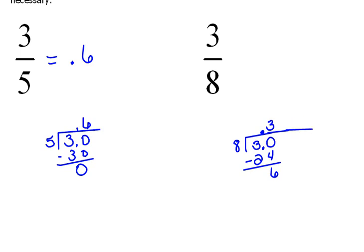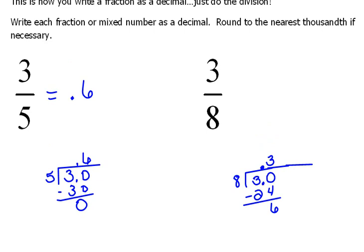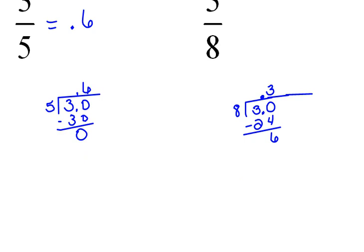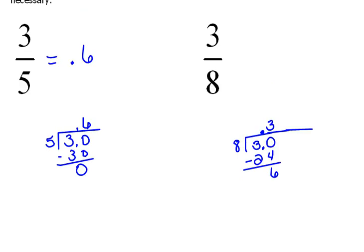Or, I don't know that I paid that close of attention to it, but in our directions, it said round to the nearest thousandth if necessary. So that means we need to have at least three decimal places whenever we're done here. So we can't stop. We need to add another zero so that we can drop that down.